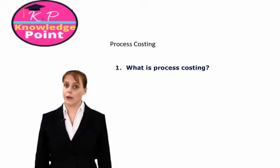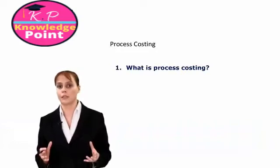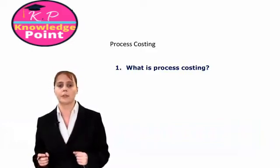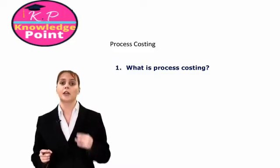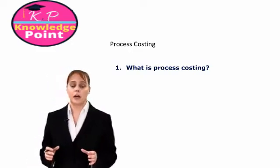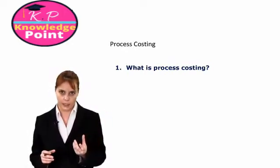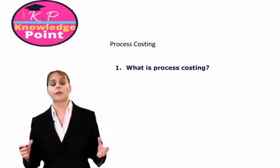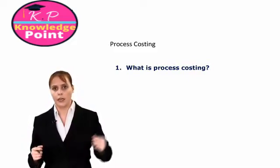In this session we're going to be looking at process costing. In the previous sessions we looked at job costing — costing in an environment where each product we produce for a customer is different in some way. Process costing we use in an environment where there is a continuous production process in place and where all of the units we produce are identical. For example, an oil refinery would be a process costing environment.